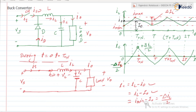As IL increases, the difference IL − I0 goes on decreasing. At some instant IL and I0 become equal, so the difference is 0. After that IL becomes greater than I0, so the difference increases again. When IL = I_max, IC = I_max − I0 = +ΔIL/2, since I_max > I0.